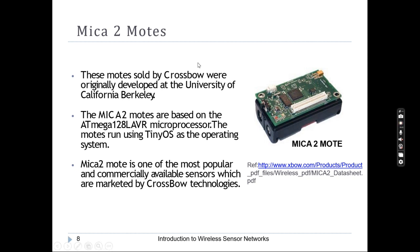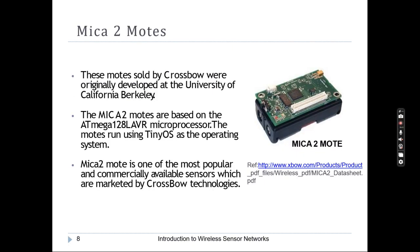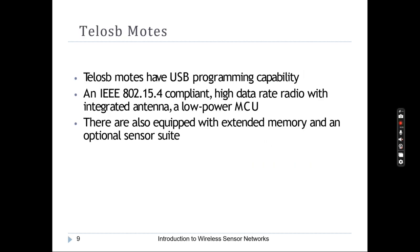An example of a sensor node is the Mica2 mote. This is how it looks — it was developed by the University of California, Berkeley and sold by Crossbow vendor. It consists of the usual three components: a sensing unit depending on the application, a transceiver for communication (antenna), a microcontroller, and a power unit. The devices are very limited and there is no wired communication available. Mica2 mote is one of the most commercially available sensors marketed by Crossbow Technology.